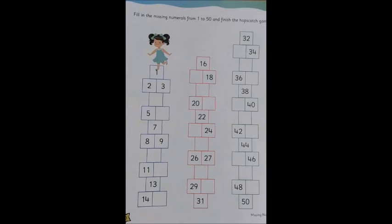Now, let's open our Little Thinker Mathematics to page number 60 and start filling the missing numerals. So, you can see the girl, she is in number 1 and after that she has number 2 and 3 already there.